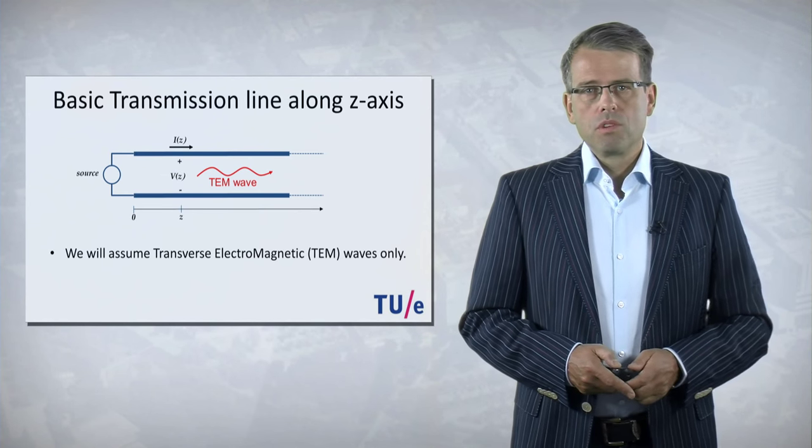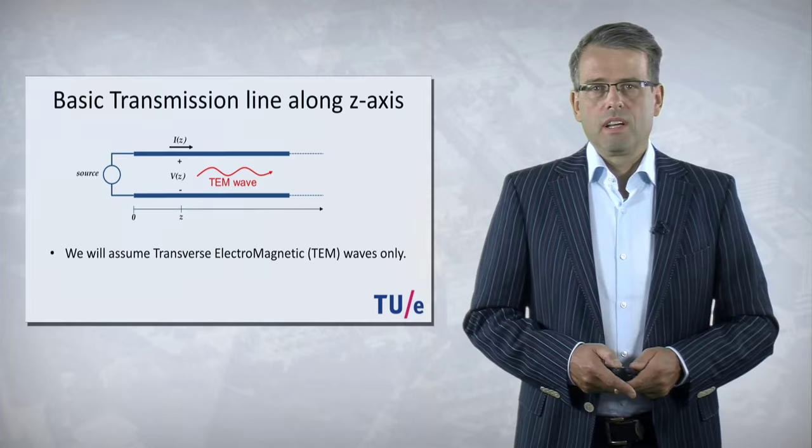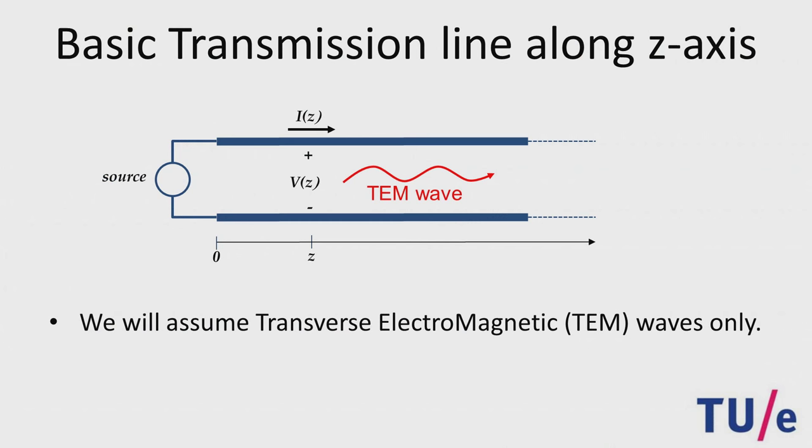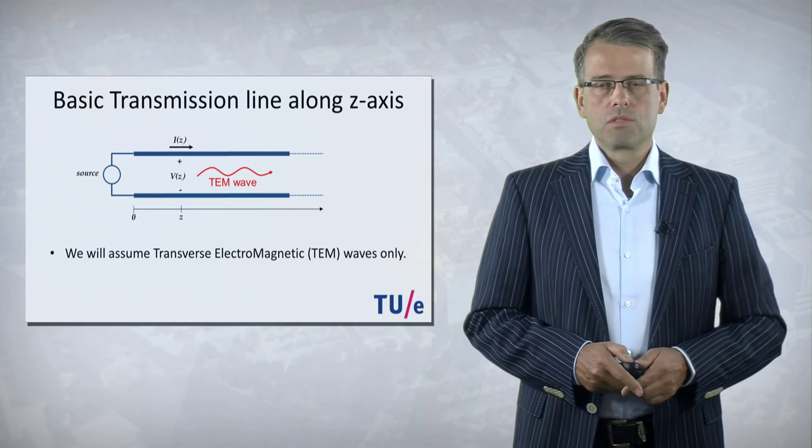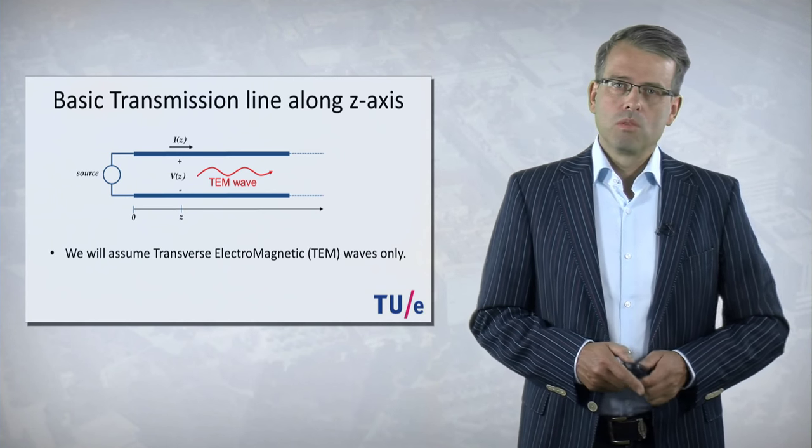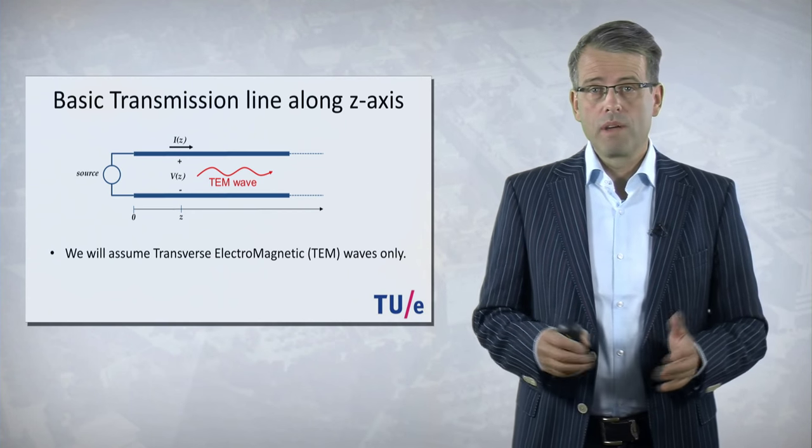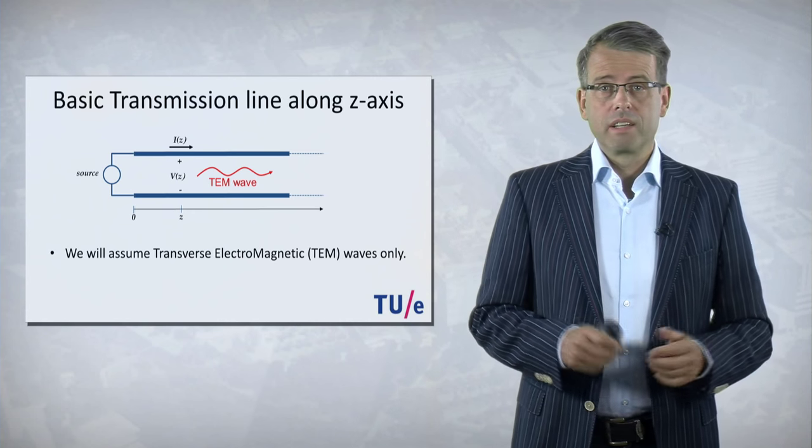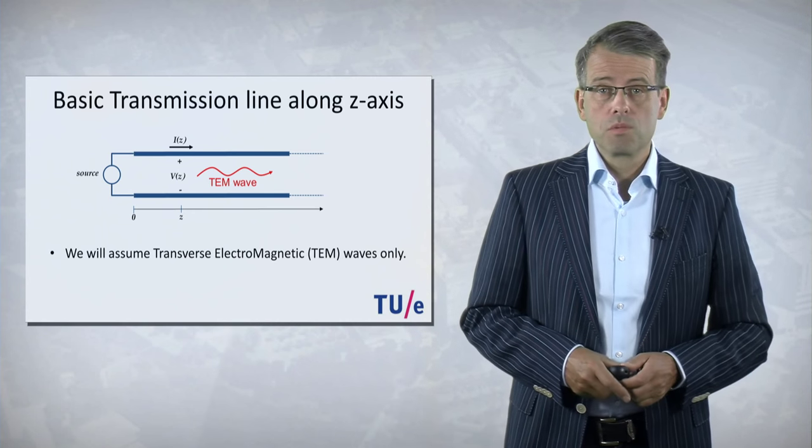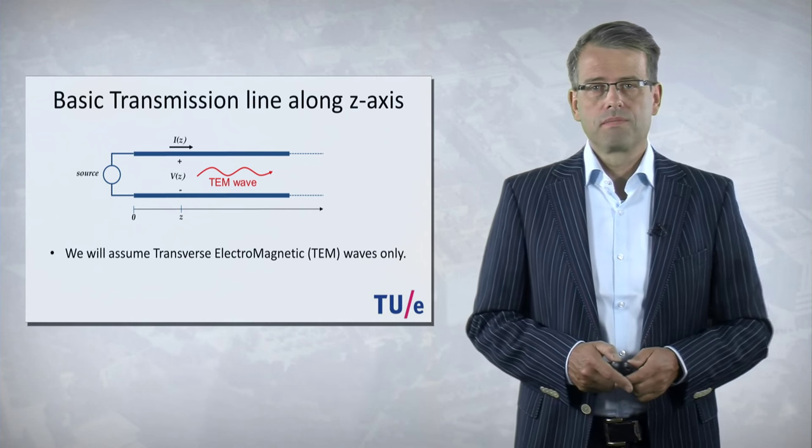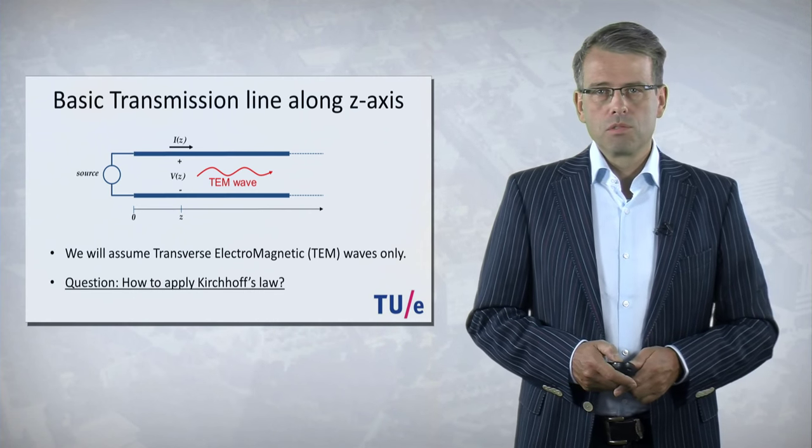Now, suppose that we want to know the current and voltage along this transmission line. How can we do that? How can we solve that? Well, there are two approaches. The first one is to use electromagnetic theory, Maxwell, and the second approach is to use Kirchhoff. In this course we're going to use Kirchhoff. But then we come up with a problem because the transmission line length can be many wavelengths long. So then how can we apply Kirchhoff, because Kirchhoff assumes that we have lumped elements equivalent circuits.